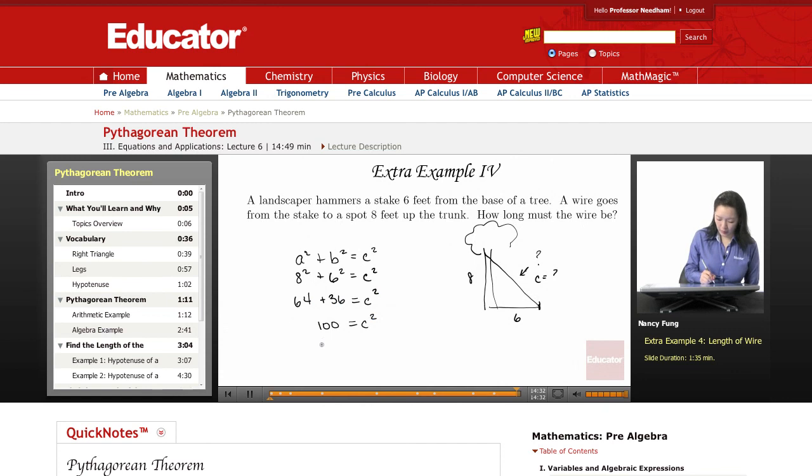So the square root C equals the square root of 100 is 10. So the wire should be 10 feet.